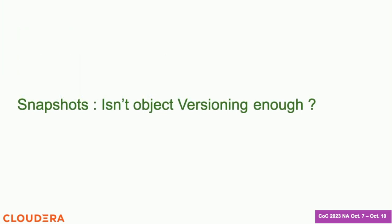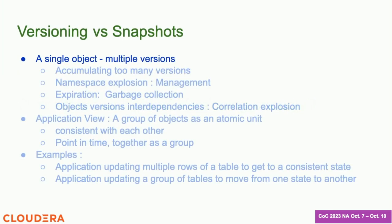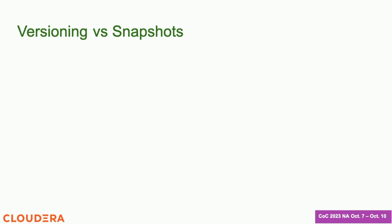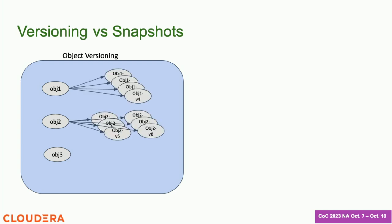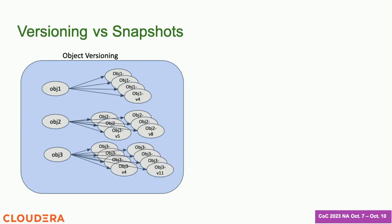Let's talk about object versioning. A lot of object stores out there have this feature of individual object versioning and they have been calling it snapshot, so let's look at the difference. In object versioning, within your bucket you create different objects, and every time they get mutated you create a new version of those objects and leave the existing version. Over time all these objects will go through multiple versions and you have a namespace explosion.